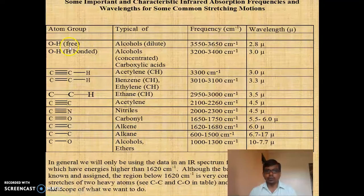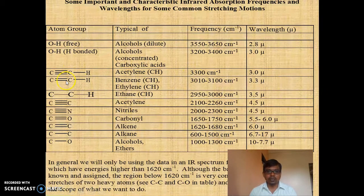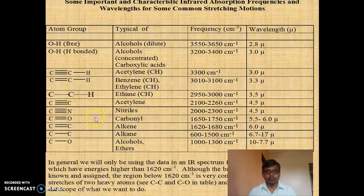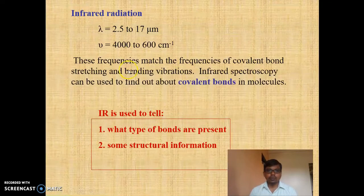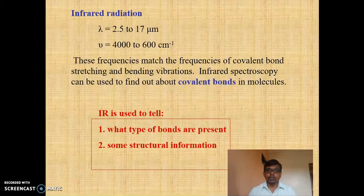This correlation chart, though not complete, gives a useful idea about the frequency required to vibrate various functional groups. For O-H in free form, more vibrational frequency is required, while in hydrogen-bonded form, less frequency is required. For C≡C triple bond, more strength means more frequency; for C=C double bond, slightly less; and for C-C single bond with sp3 carbon, less s-character means less vibrational frequency. This is very important for identifying functional groups in organic molecules.